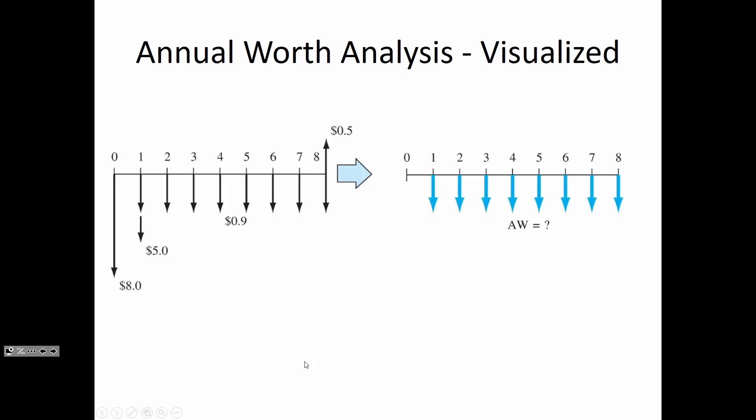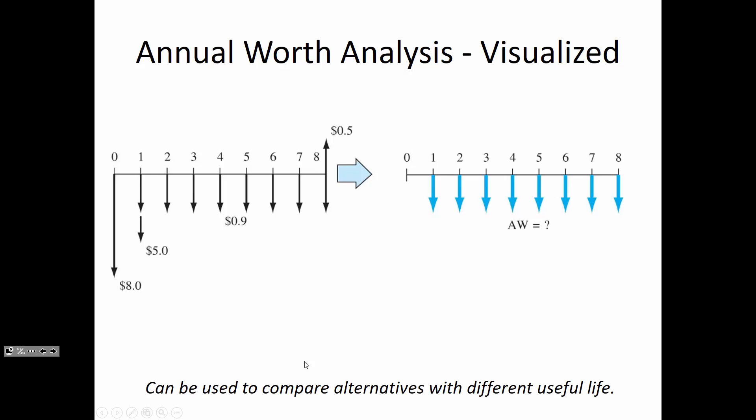Essentially you're saying: what if I just paid for it on an annual basis, maybe through leasing or through paying a contractor? This approach can be used to compare alternatives with different useful lives. By way of review, since we have an exam on Monday, what are some of the ways we can handle cash flow diagrams of different useful lives? We've talked about three so far — least common multiple is one.